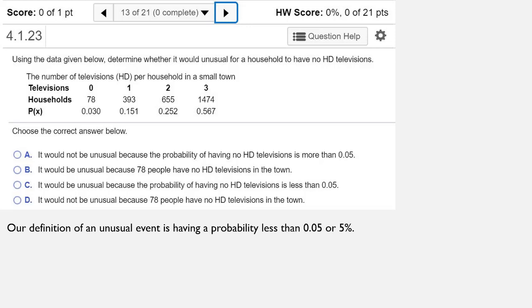Our definition of an unusual event is any event that has a probability less than 0.05, which represents 5%. So when we look at the probability values,